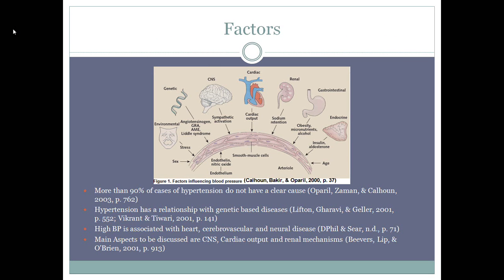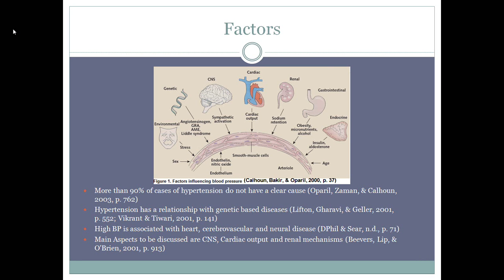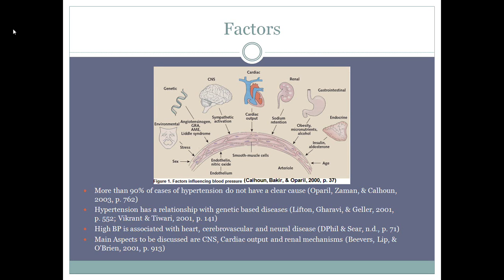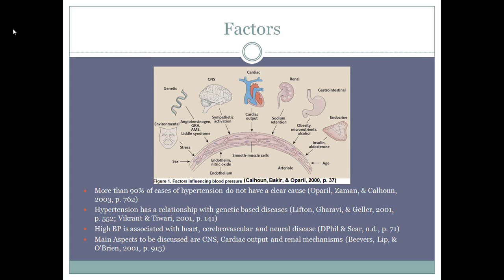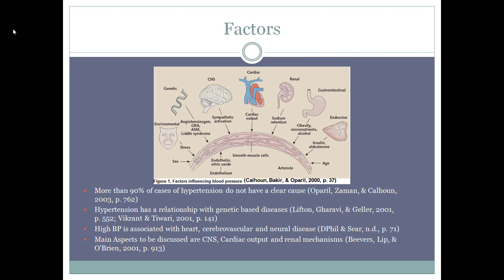More than 90% of cases of hypertension do not have a clear cause, as stated by Apparel and colleagues and Vikran and Tiwa. Hypertension has a tendency to cluster in families, usually representing a collection of inherited genetic-based diseases. Several physiological factors influence blood pressure, including the nervous system, cardiac, renal, gastrointestinal, and endocrine systems, along with sex and age. High blood pressure is associated with coronary heart disease, cerebrovascular disease, and neural disease, where the extent of organ involvement determines outcomes such as stroke and myocardial infarctions. The main physiological aspects to be discussed — the central nervous system, cardiac output, and renal mechanisms — are the most recurring reasons for high blood pressure.